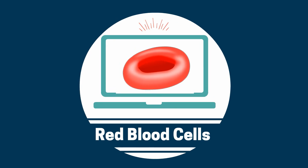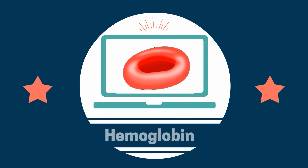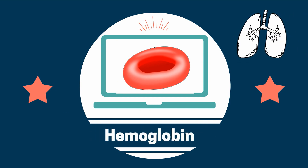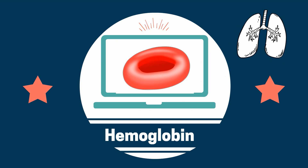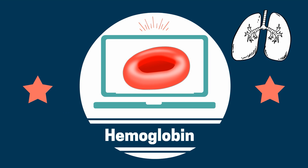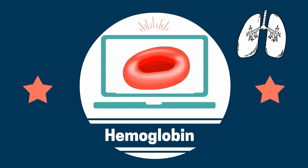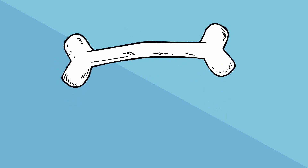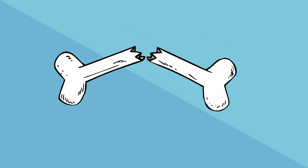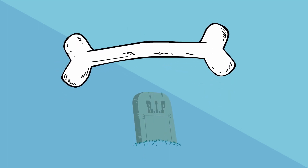Red blood cells, also called erythrocytes, contain a protein called hemoglobin that carries oxygen. Red blood cells also remove carbon dioxide from your body and transport it to the lungs for you to exhale. They are made inside your bones in the bone marrow and typically live for around 120 days.